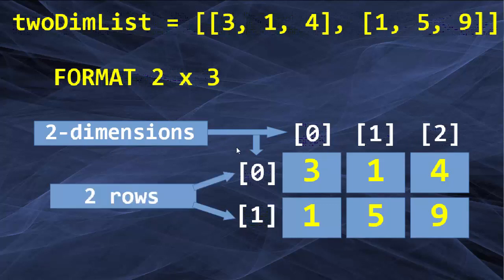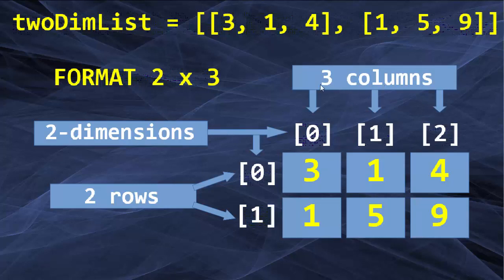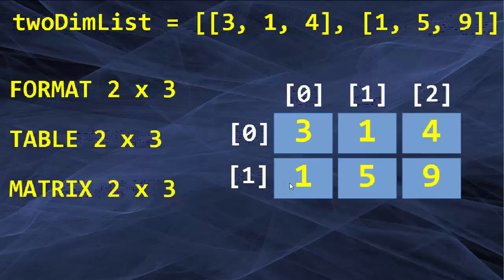The first dimension can be represented by rows — we have two rows inside this list, and each row is a separate list within a list. The second dimension of our two-dimensional list is columns — we have three columns in this example, and each column represents one element inside this list. This two-dimensional list has format 2 times 3, and we can think of it the same as a table of format 2 times 3, or the same as a matrix with format 2 times 3.